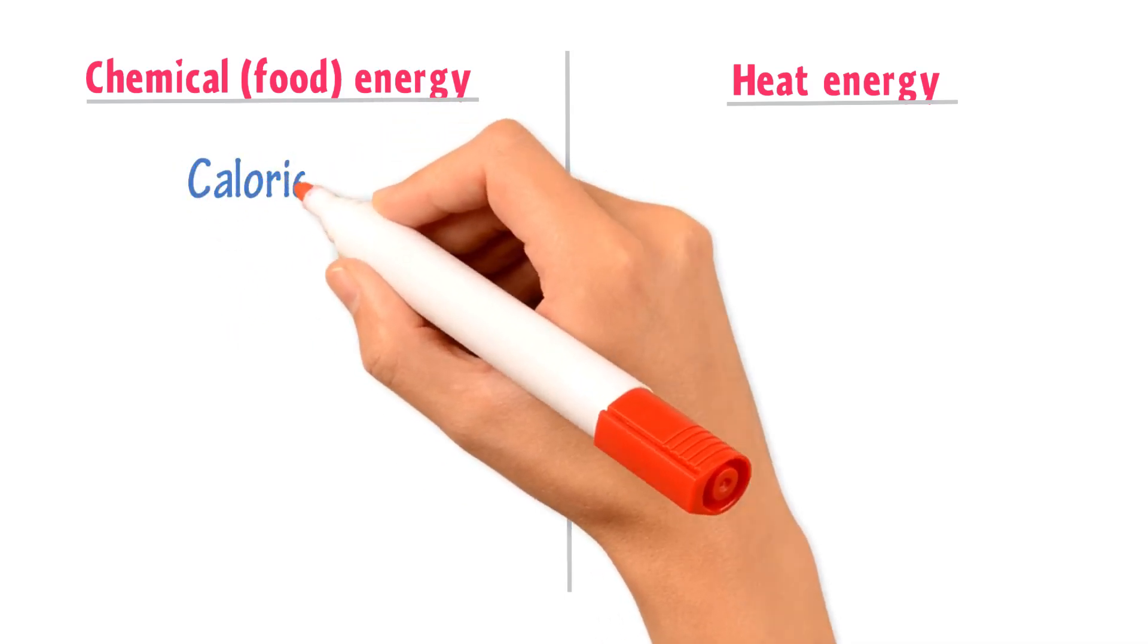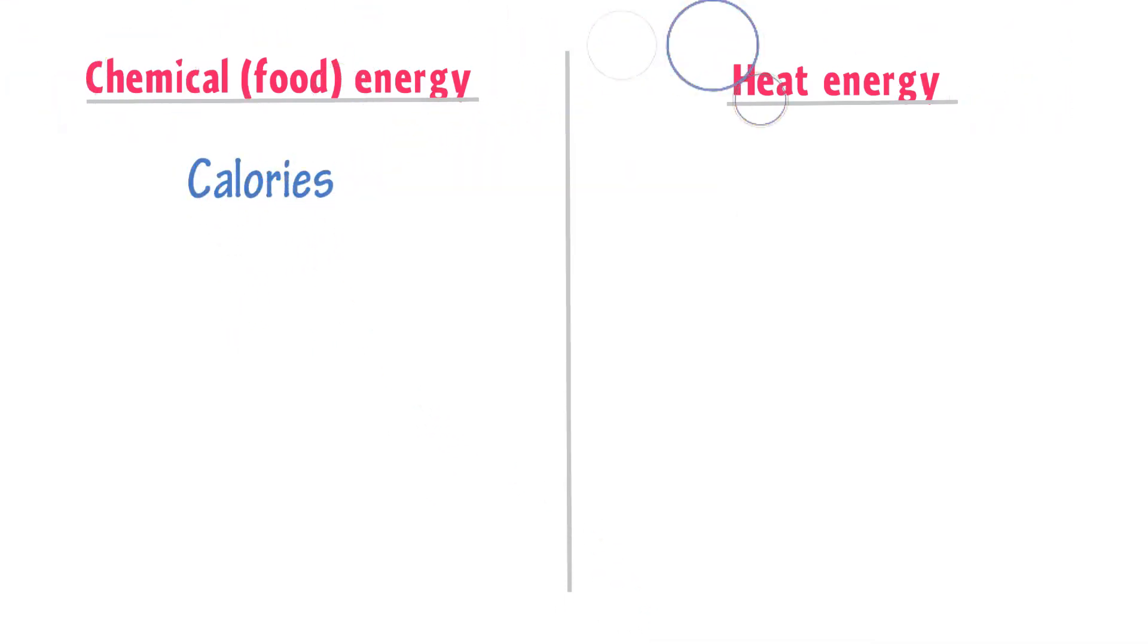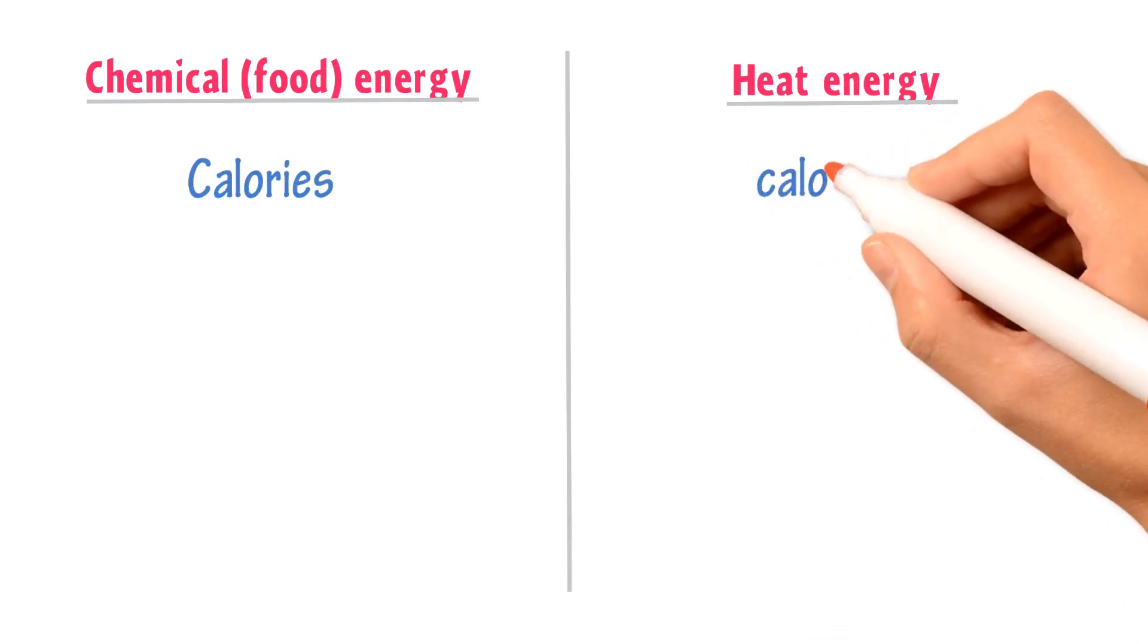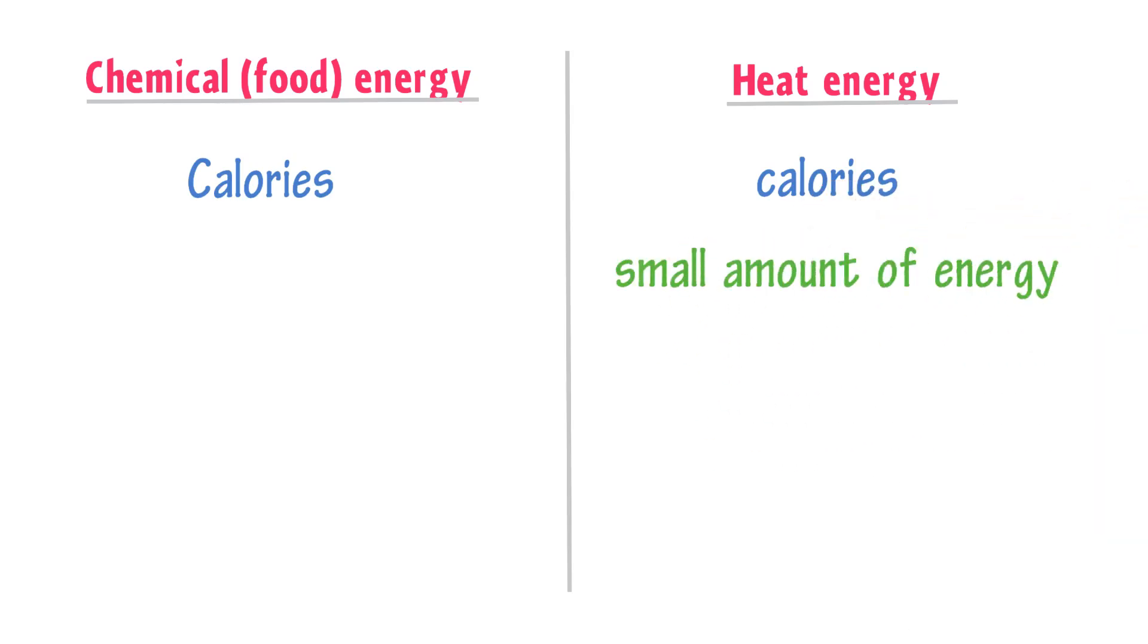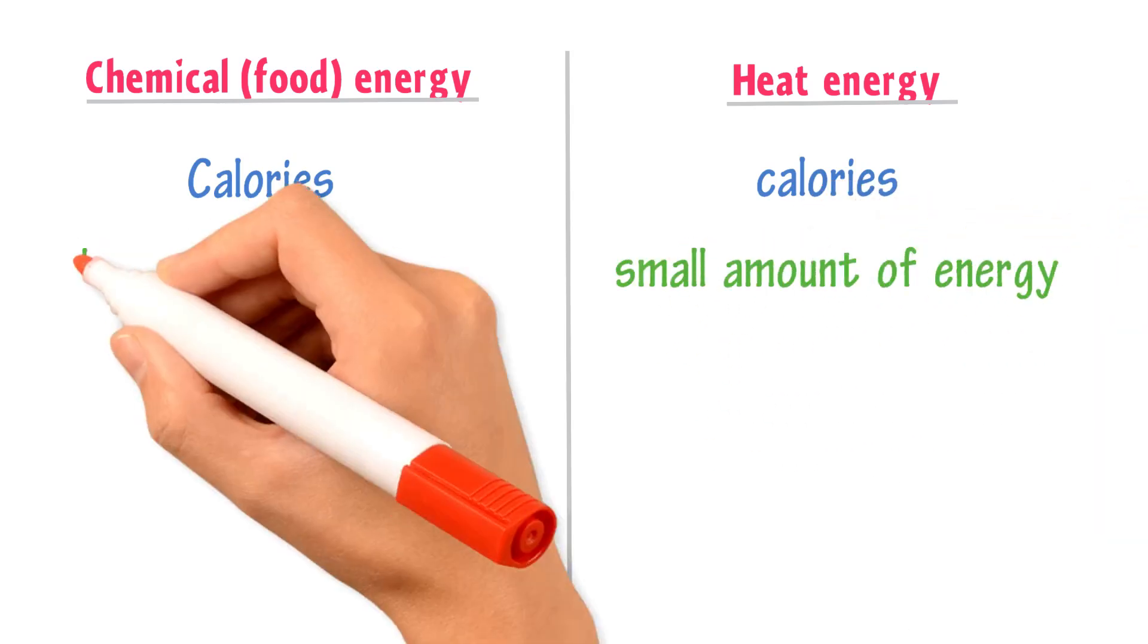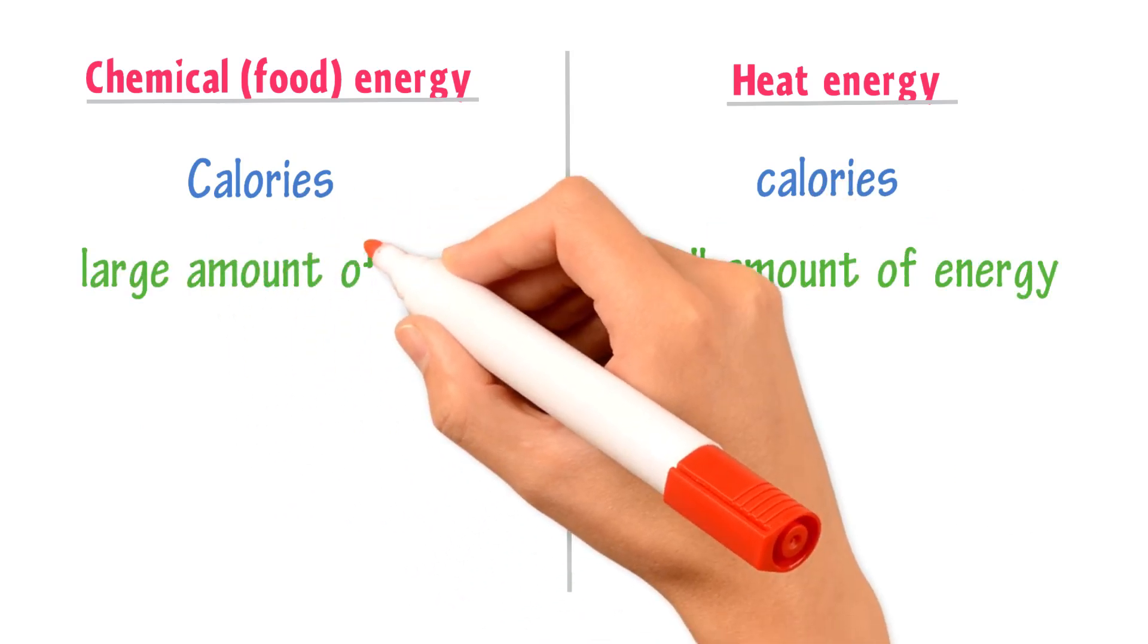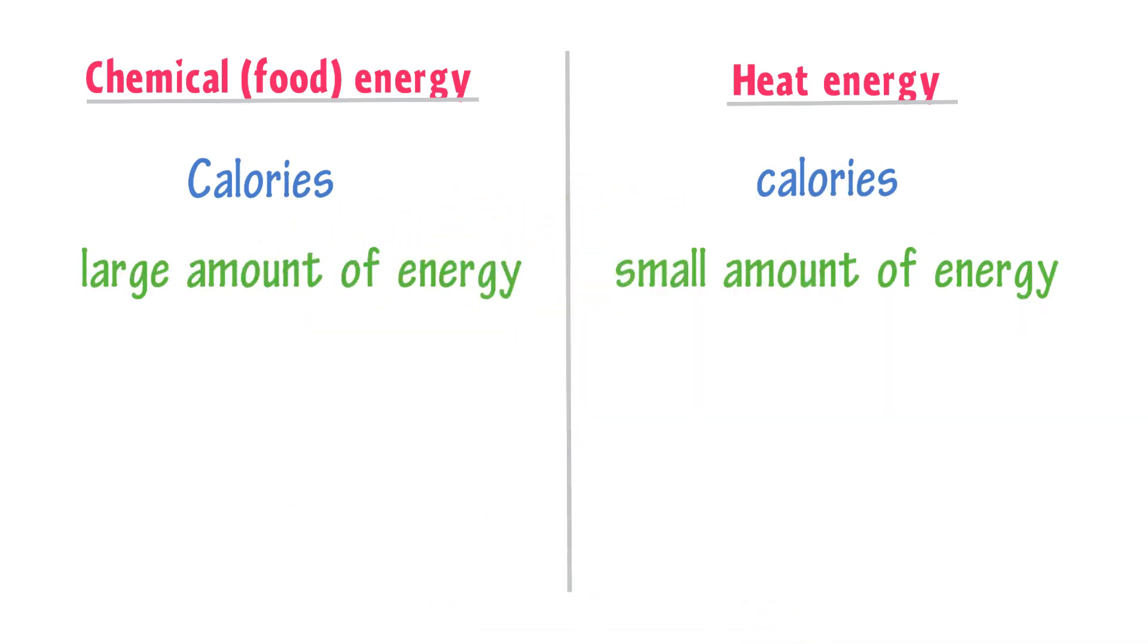Well, we write the calories of chemical energy with a capital C, while we write the calories of heat energy with a small c. The heat calorie is a very small amount of energy, while the chemical energy calorie is much bigger than heat calorie.